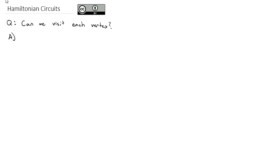When we visit each vertex, those are called Hamiltonian circuits, where we visit each vertex once with no repeats. And of course, because it's a circuit, we have to make sure that we start and end at the same vertex.